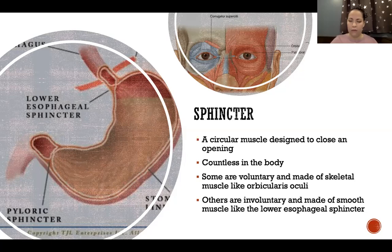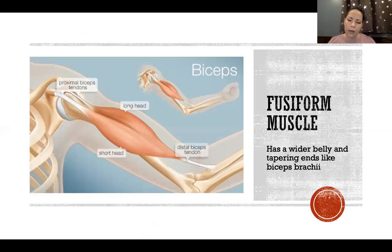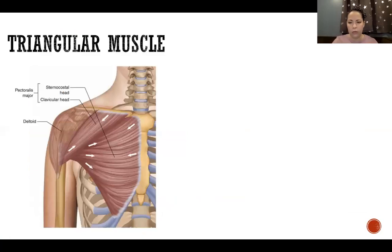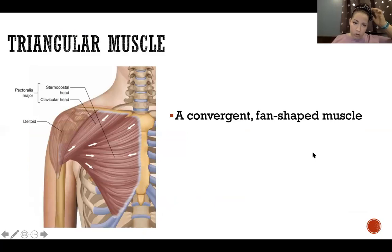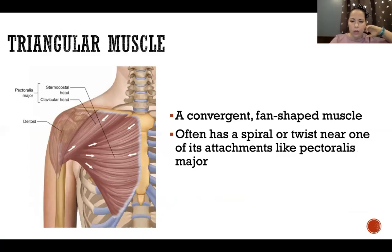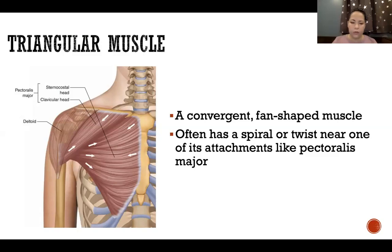A fusiform muscle has a wider belly and tapering ends — like biceps brachii — with a big belly in the middle and narrow tapering tendons attaching to the bones. A triangular muscle, also called a convergent muscle, is a fan-shaped muscle that often has a spiral or twist near one of its attachments, like pectoralis major, which has a broad attachment spanning the clavicle, sternum, and costal cartilage, converging and twisting to insert on the humerus.